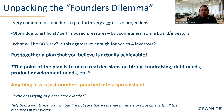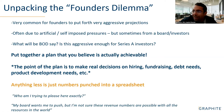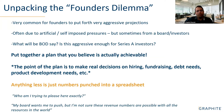It's common to put forth a very aggressive projection, and that's okay. Sometimes it's artificial — you're wondering what investors will think. But usually entrepreneurs tend to be optimists and lean toward the more aggressive side.